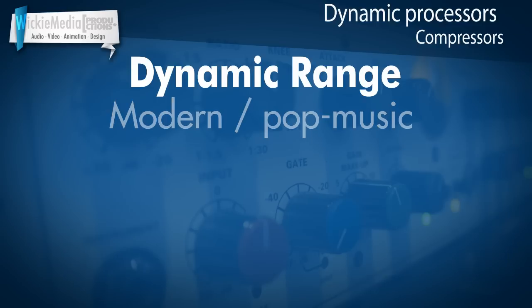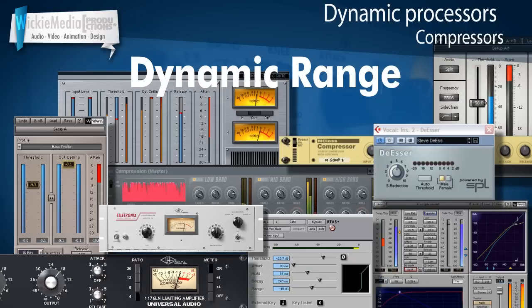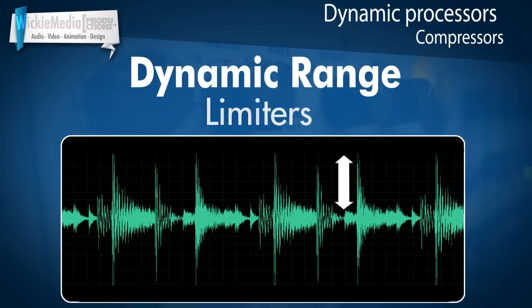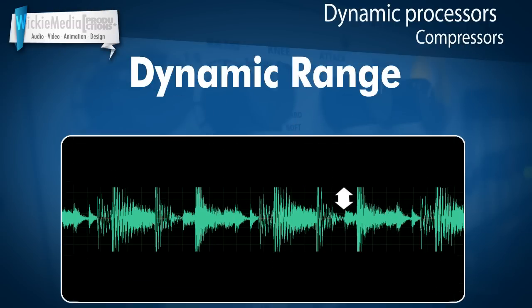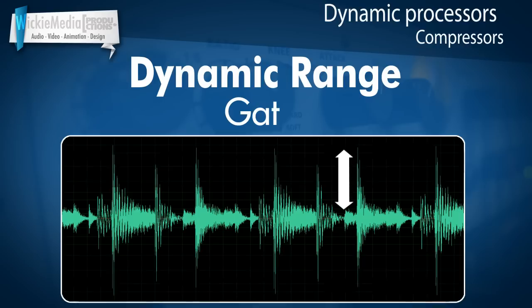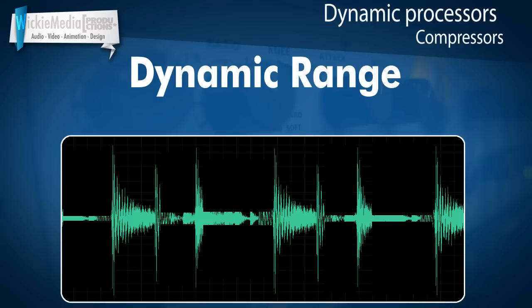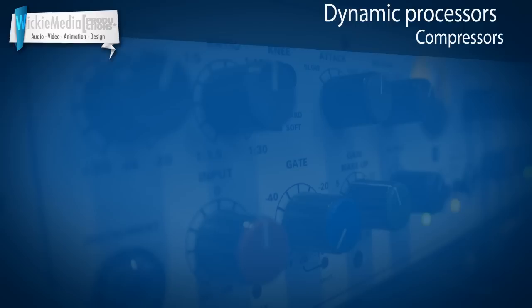Dynamic processors are devices which control the dynamic content of an audio signal. We use compressors, maximizers, and limiters to actually make this dynamic range smaller. There are also tools like gates and expanders which make this dynamic range larger. There are various ways to influence the dynamic range of a signal, and this will really affect the perception of your sound a lot.